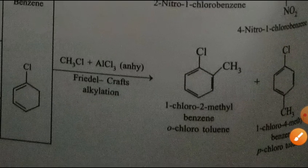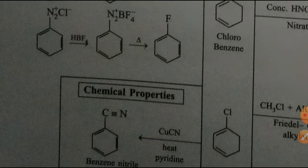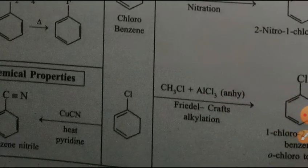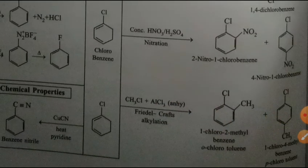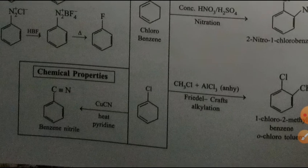Similarly, in Friedel-Crafts alkylation, chlorobenzene with an alkyl halide and AlCl₃ gives the alkyl group at ortho and para positions. Reacting with an acyl group again gives the acylated product at ortho and para. Reacting chlorobenzene with copper cyanide and heating in pyridine gives benzonitrile. These are the different chemical properties of chlorobenzene.